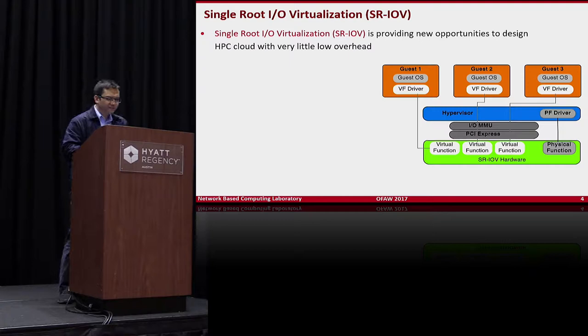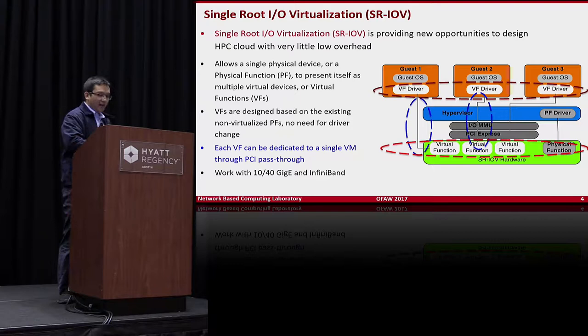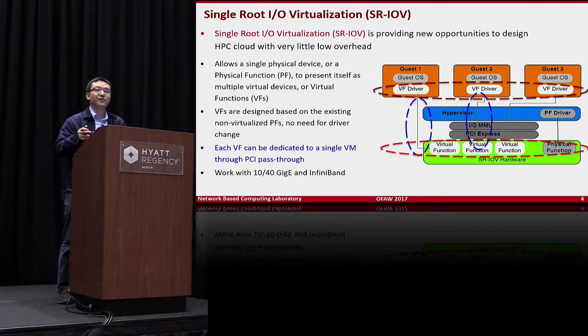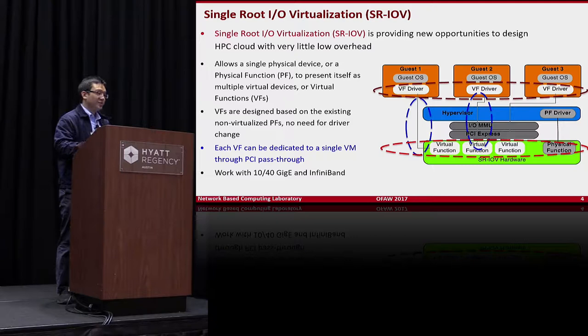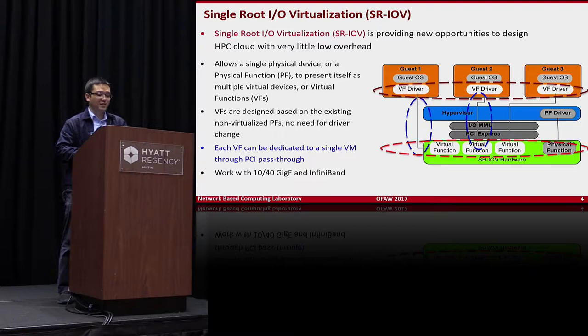SR-IOV provides new opportunities to design HPC clouds with very low overhead. The main idea is: given a physical device, SR-IOV allows you to present it as multiple virtual devices or virtual functions. Each virtual function can be directly mapped to a dedicated virtual machine via PCI passthrough, giving very good performance as well as isolation. This works with 10 GbE, 40 GbE, and InfiniBand.